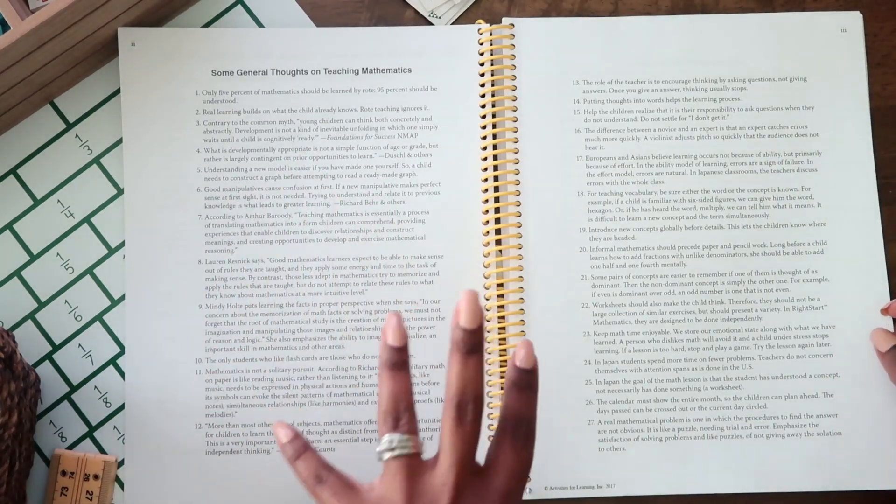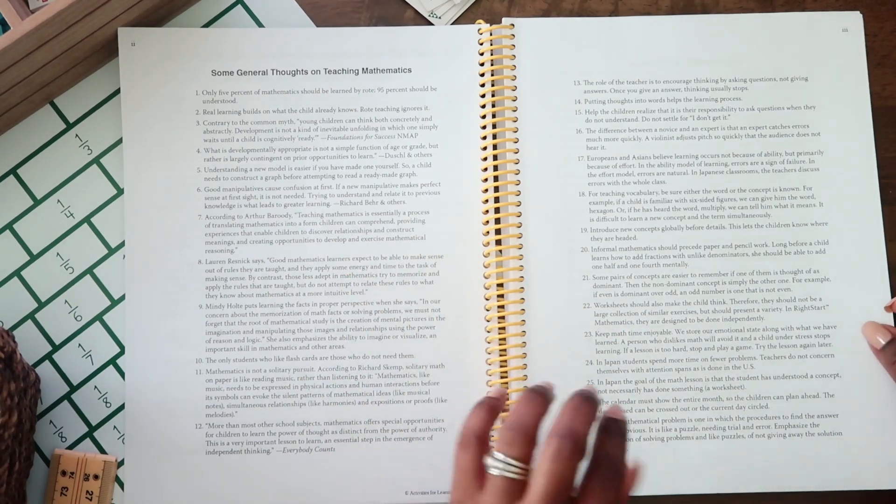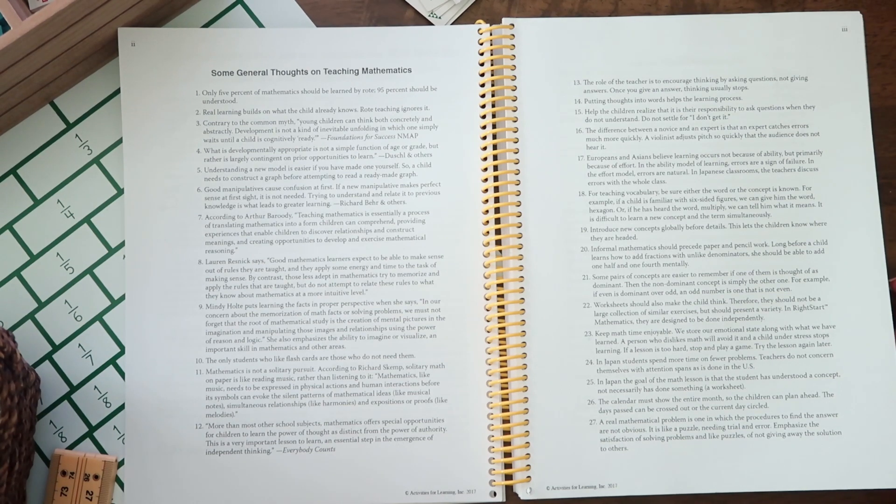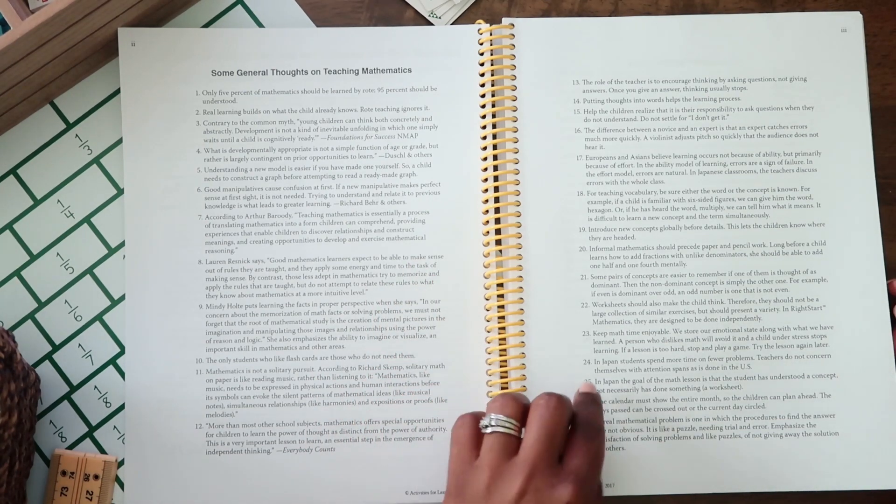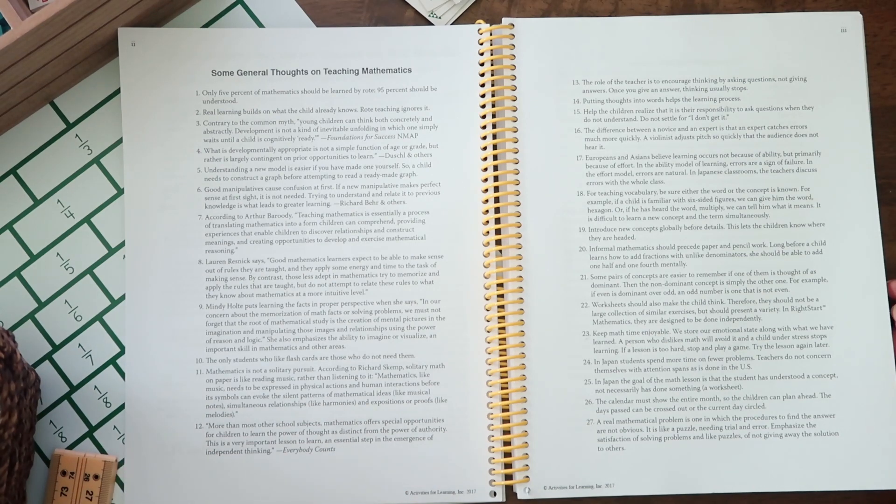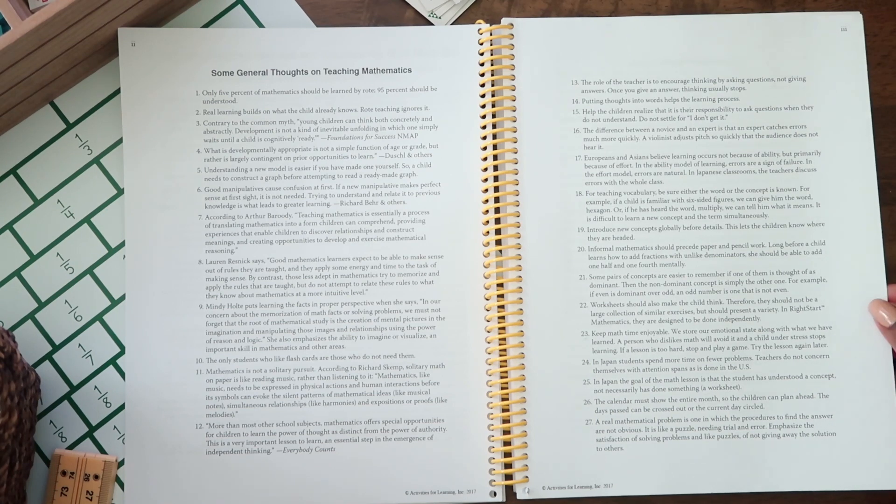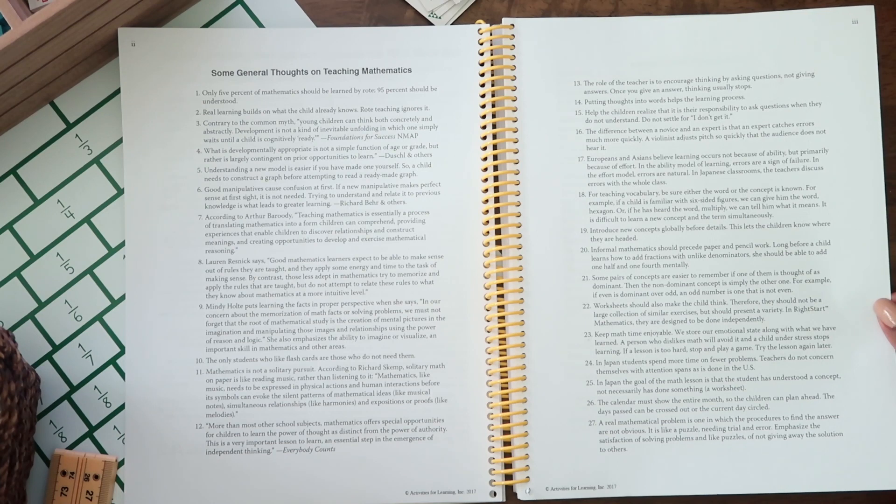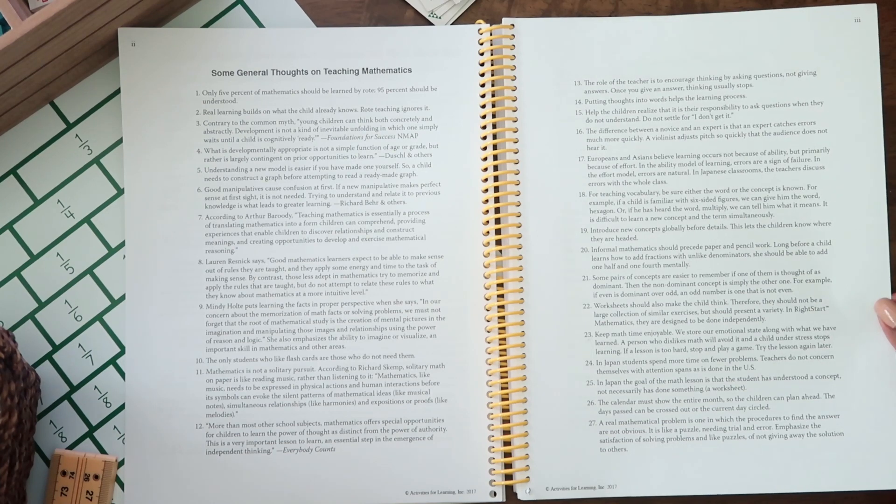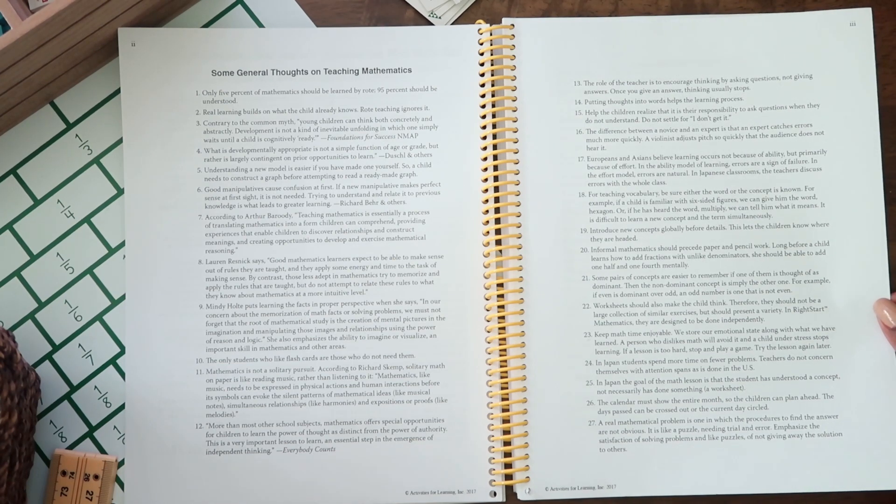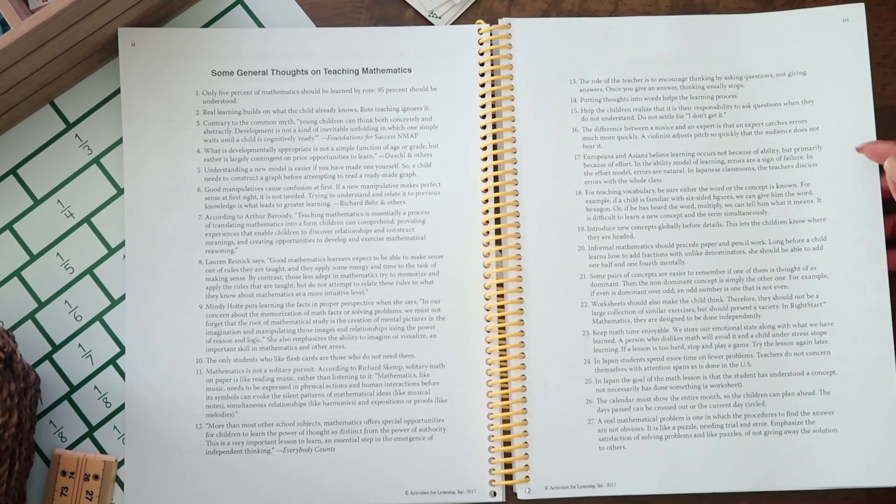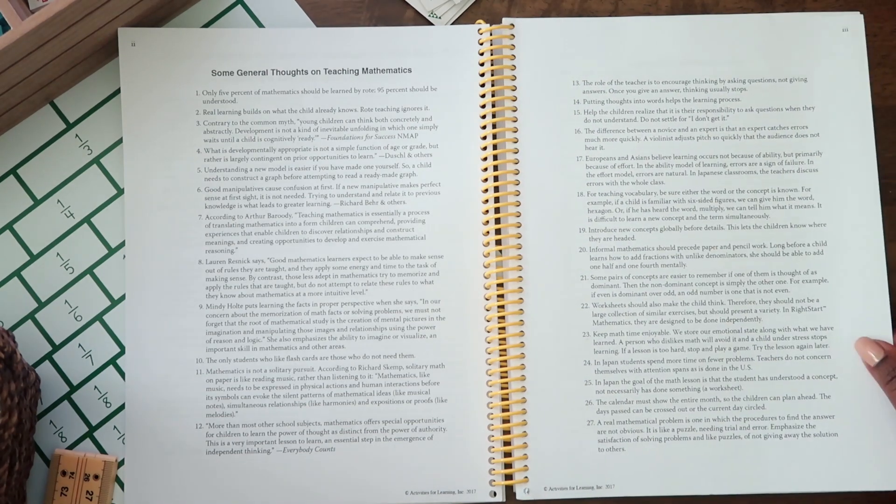It talks to you about how the program was developed, and then it has these general thoughts on teaching mathematics. And I really liked this because coming from tears when doing math, I was so grateful for this program. But I really liked this one, number 23. It says keep math time enjoyable. We store our emotional state along with what we have learned. A person who dislikes math will avoid it, and a child under stress stops learning. If a lesson is too hard, stop and play a game. Try the lesson again later. And I really liked that. Definitely give these a read. And I think these are at the beginning of each level.